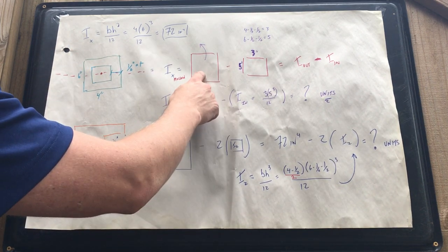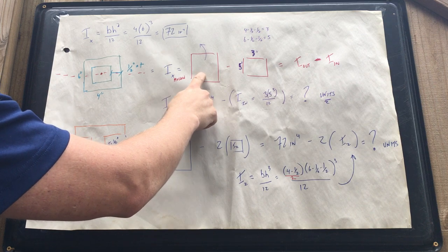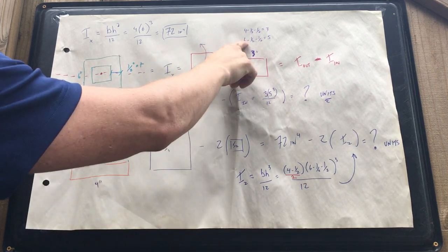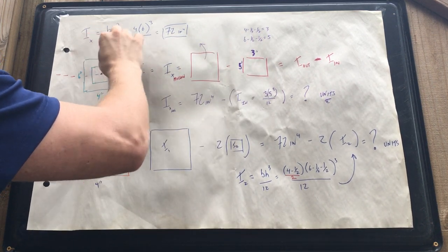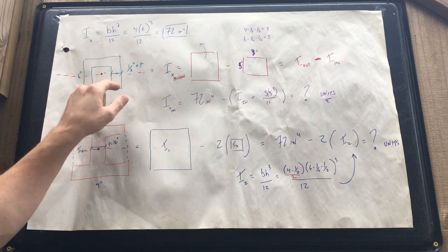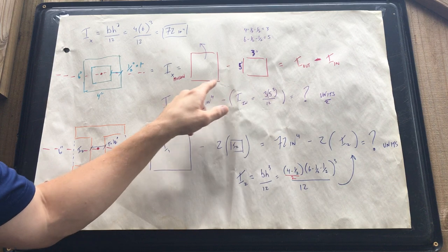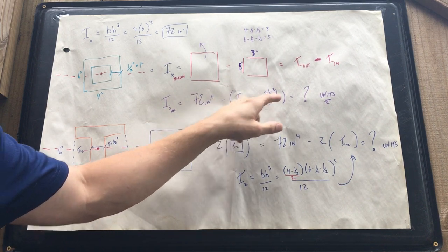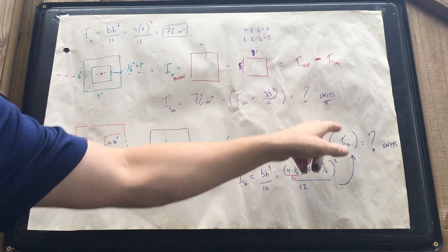We already know this is 72. We just need to figure out the dimensions of the smaller one. So 6 being the top minus a half and a half gives us 5. The same thing with this. Redo your equation: you have 72 minus your i_n. Calculate that i_n and figure out what your units are.